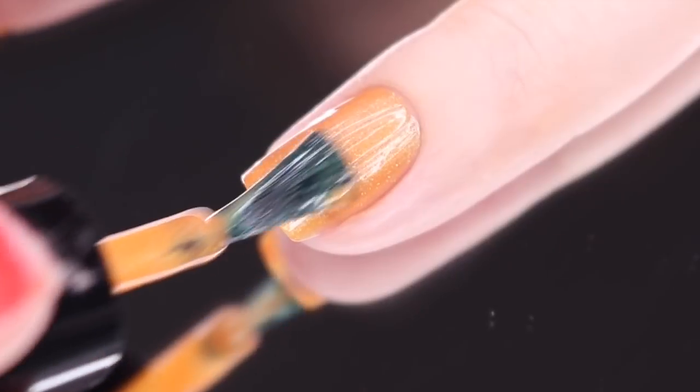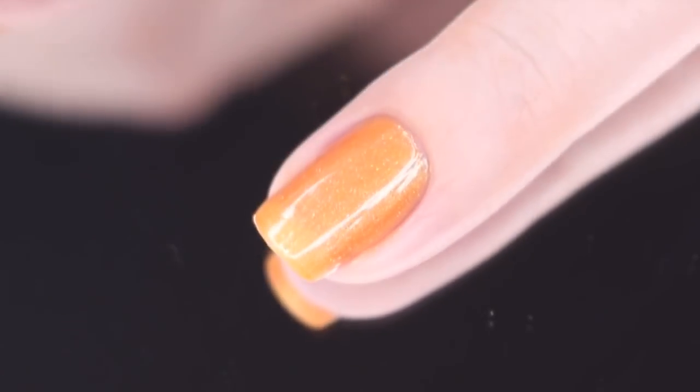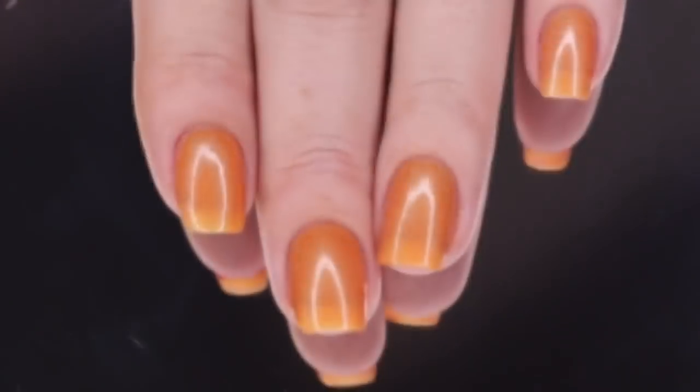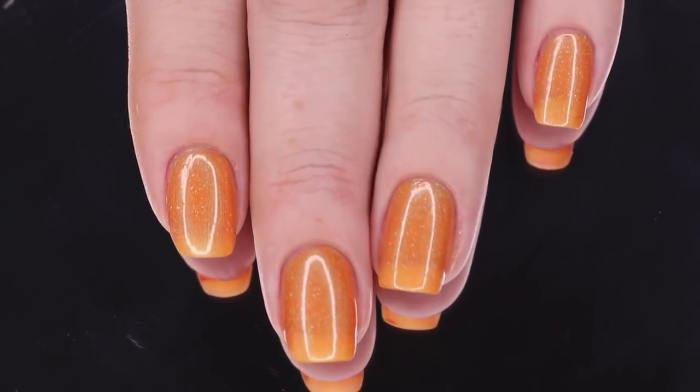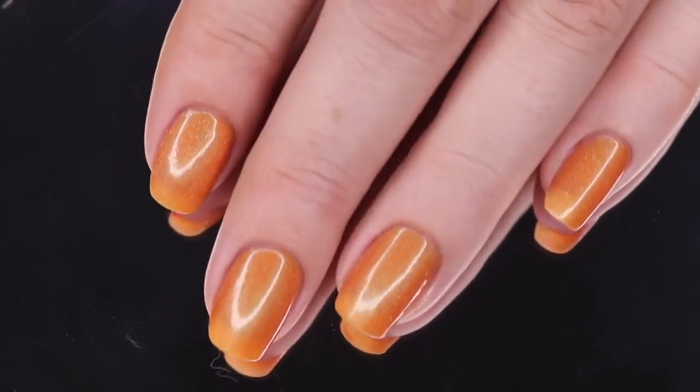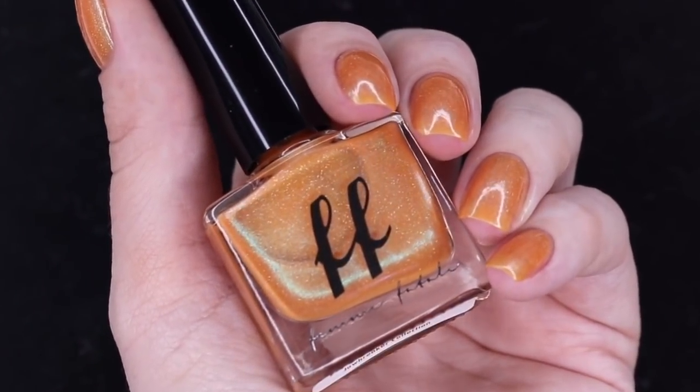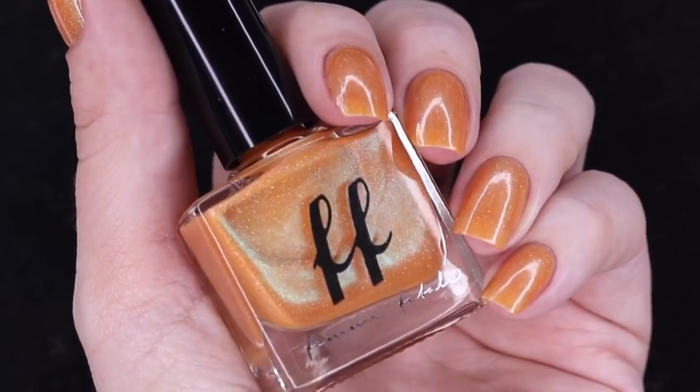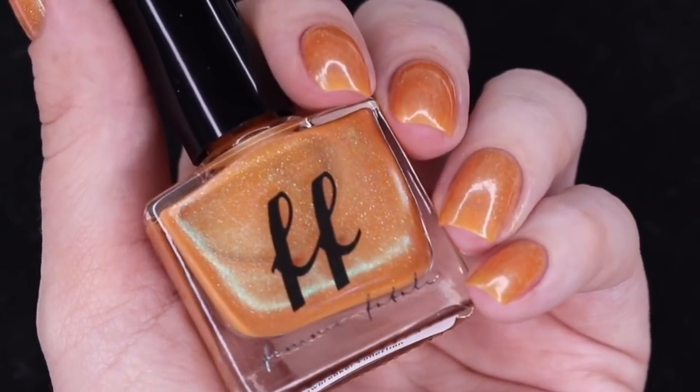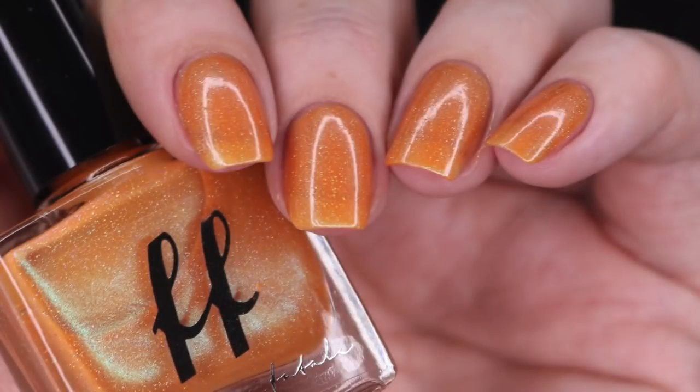Three coats is on the edge of being opaque, but I did still have a visible nail line. If you wanted to, you could go in for that fourth or use an undie. Here is a look at that completed mani at three coats before a glossy top coat underneath artificial lighting. Here's a quick view from a different angle with that bottle to show off a little bit of the turquoise shimmer. And then this is my final swatch photo at an angle underneath artificial lighting.